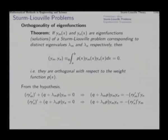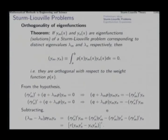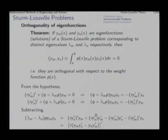On the right-hand side, the four remaining terms together form the exact derivative of r(y_m y_n prime − y_n y_m prime). So we have (λ_m − λ_n) p y_m y_n equal to the derivative of this bracketed expression.